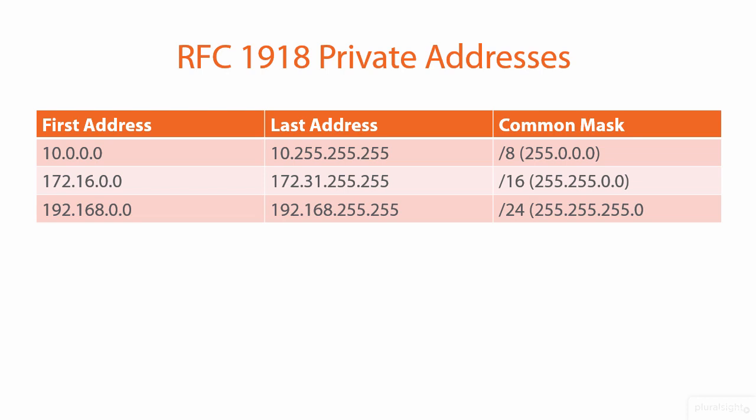In Request for Comments 1918, we have defined ranges of reserved private addresses that cannot be routed. Routers will not pass these packets out onto the internet. So whenever you see an address that starts with 10, or an address that starts with 172.16 up to 172.31, or finally an address that starts with 192.168, we're talking about private non-routable addresses.